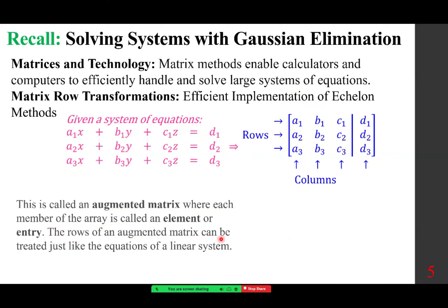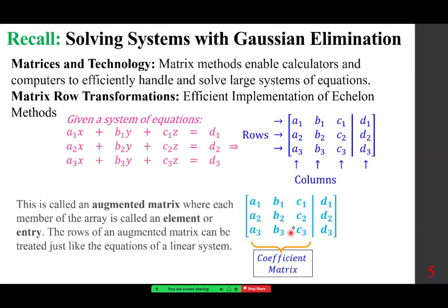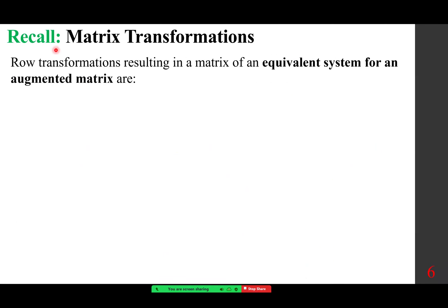The rows of an augmented matrix can be treated just like the equations of a linear system — in essence, these are equivalent. The left portion is called the coefficient matrix, and the last column represents the constants. We can do matrix transformations because these two representations are equivalent. Row transformations result in a matrix of an equivalent system. Whatever we do to equations, we can do to rows.